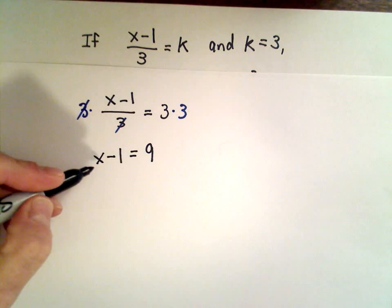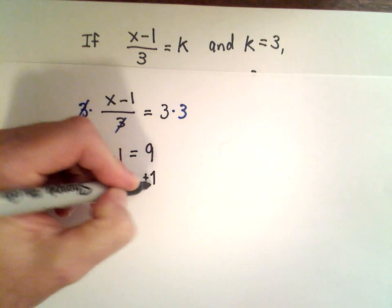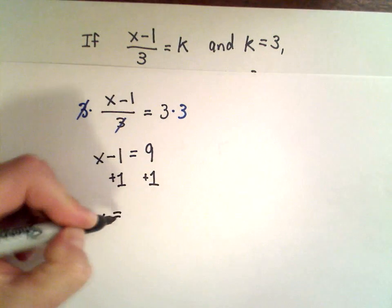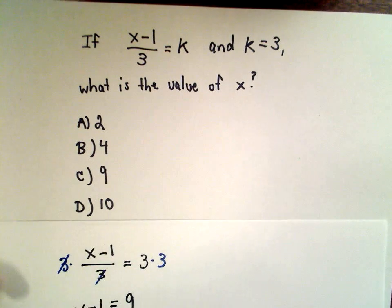And now to solve for x we can just add one to both sides. And that'll leave us with the value of x equals 10, which was answer choice D.